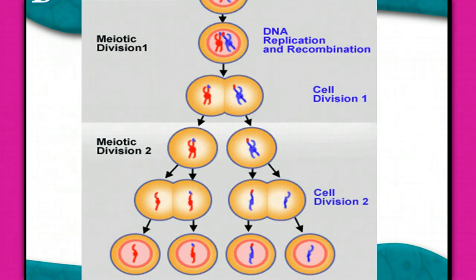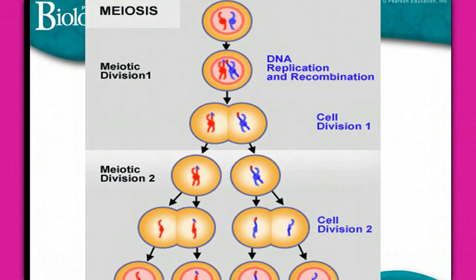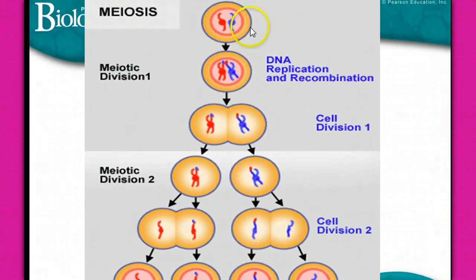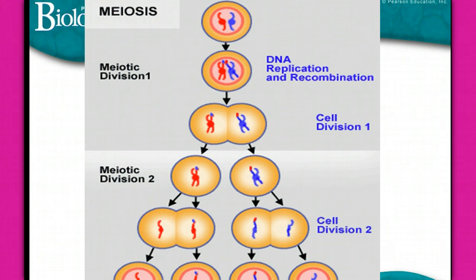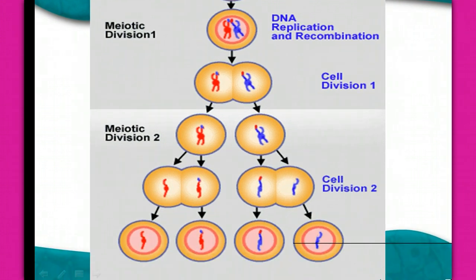Looking at the diagram: the chromosomes are duplicated, so there is an exact replica of each one. In that first meiotic division, just like mitosis, the cells divide and are separated into two new cells. Instead of going through interphase, they immediately begin to split again — the centromere is broken, and each individual chromatid, which is now considered a chromosome in and of itself, moves into different cells.